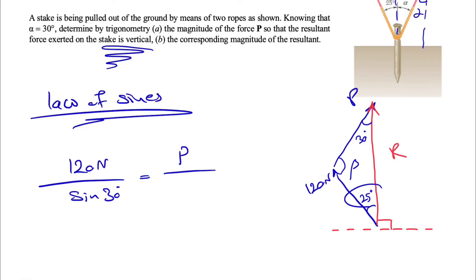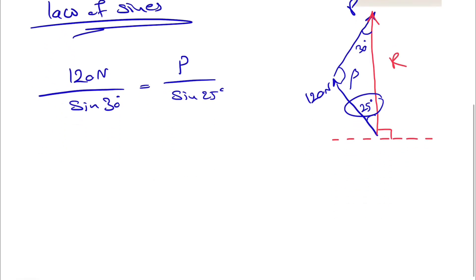Which will be 120 times sine of 25 divided by sine of 30 degrees. So this is easy enough to calculate with the calculator, and if we do that we'll get 101.4.